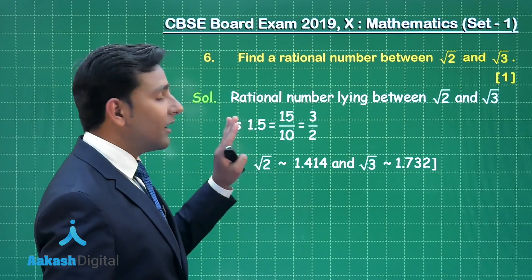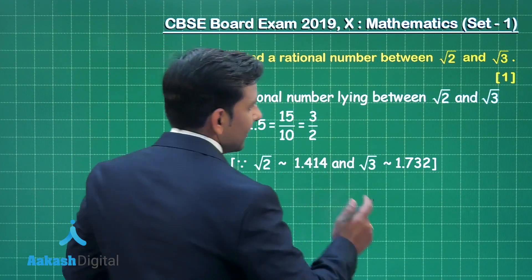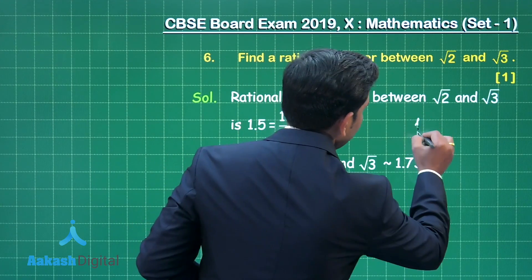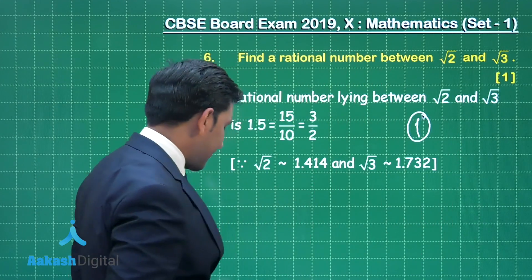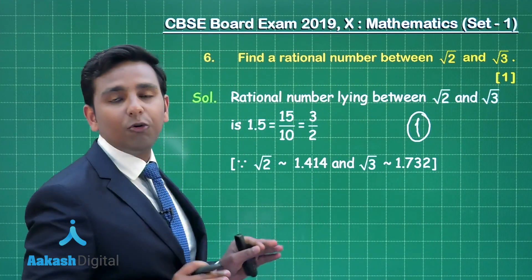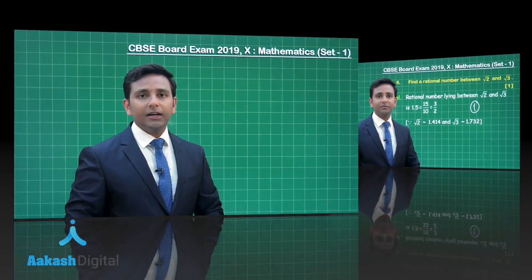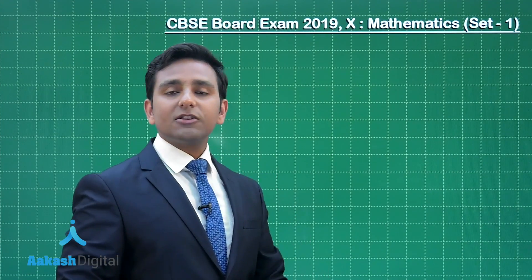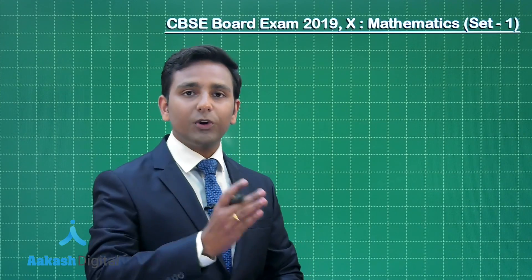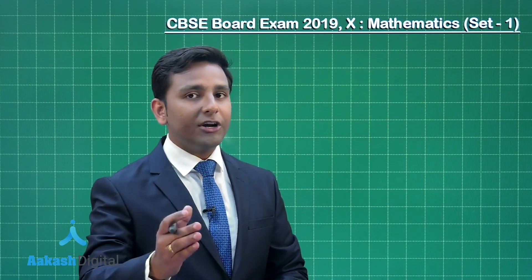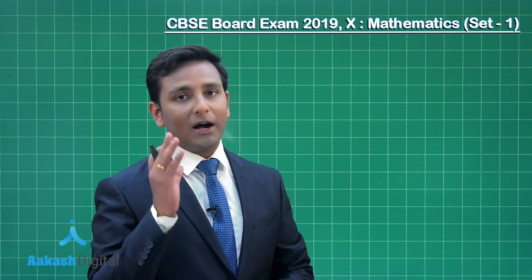This is the answer for this question, and this step will give you one complete mark. Now let us discuss the solutions of Section B questions, that means question number 7 to 12. Each question carries 2 marks.